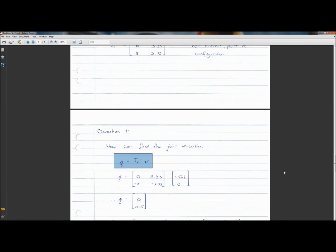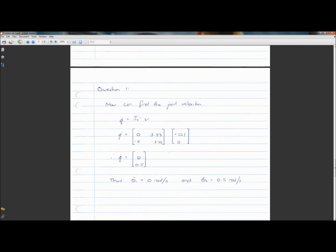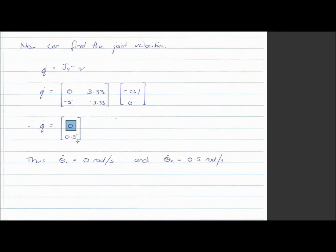We can now find the joint velocities using this formula. We simply plug in the inverse Jacobian and our tool-tip velocities. We were told the robot is moving at 100 millimeters per second in the negative x direction, so that's -0.1 meters per second in x and 0 meters per second in y. Multiplying that out, you get q-dot equal to 0 radians per second and 0.5 radians per second.